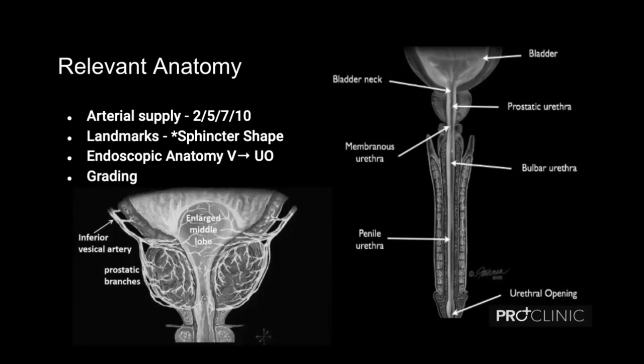We have to understand the landmark of the sphincter, particularly because anteriorly the sphincter is a little wider. We have to ensure a little more margin when dissecting the apical portions in the anterior part of the prostate — the 11 o'clock to 1 o'clock part of the dissection. We have to understand the endoscopic anatomy from the verumontanum to the ureteric orifices — how they look, what happens when you dissect them, and the resistance of these tissues.